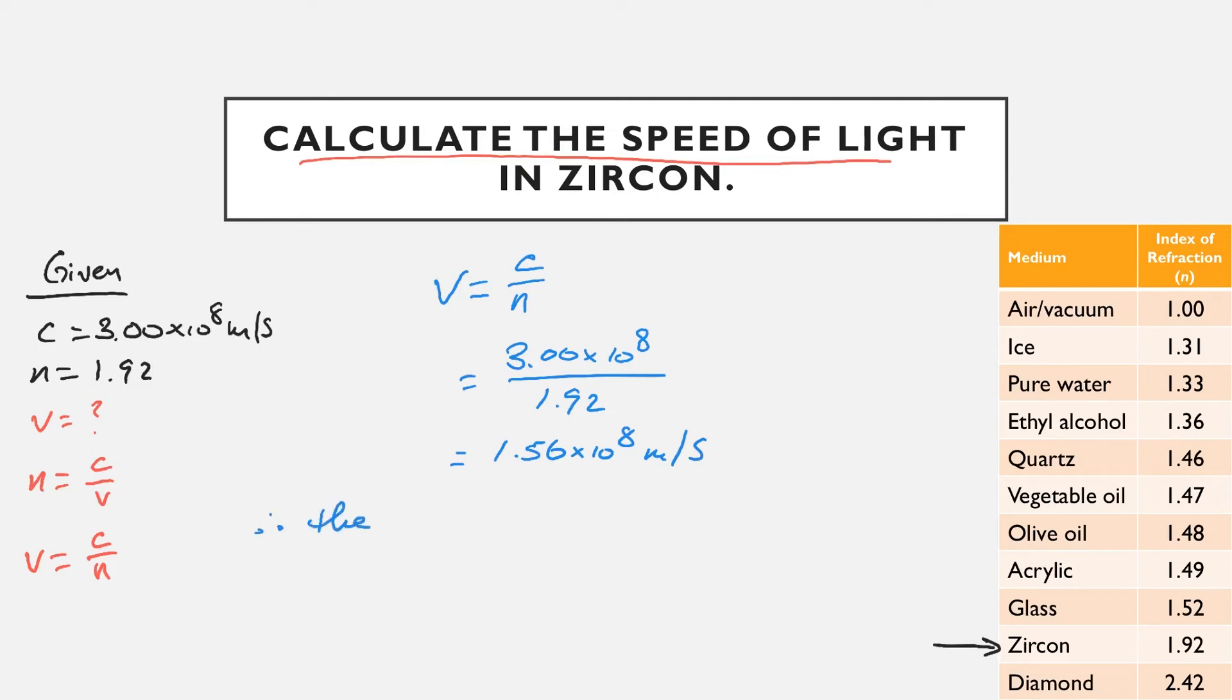Finish that off with the therefore statement. Therefore, the speed of light in zircon is 1.56 times 10 to the 8 meters per second.